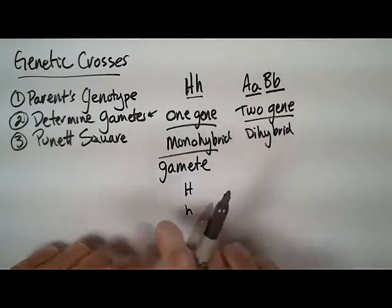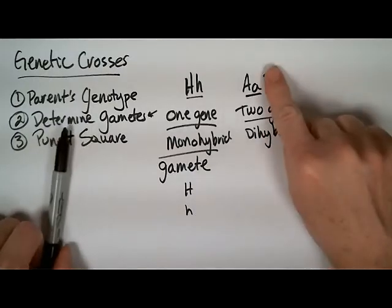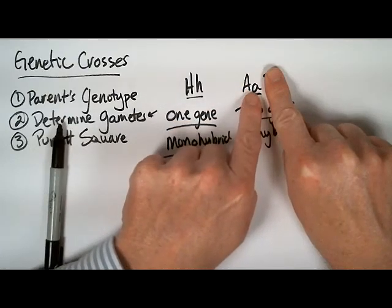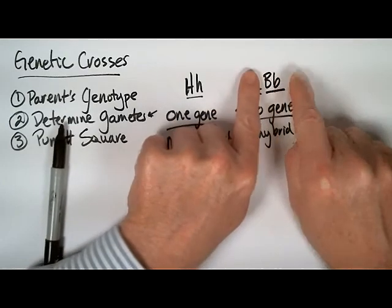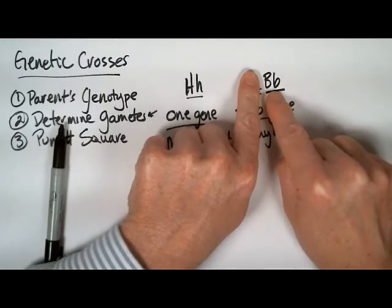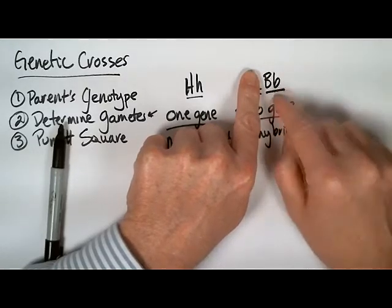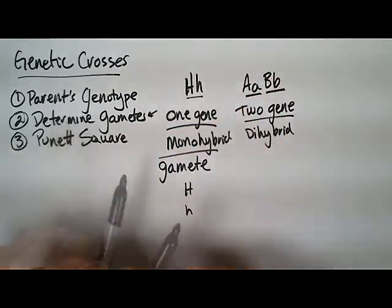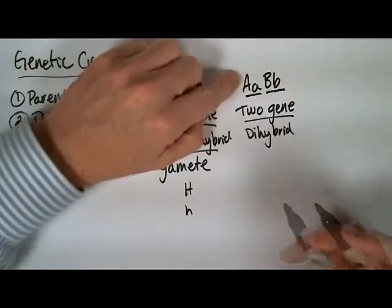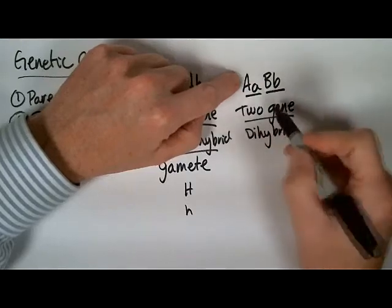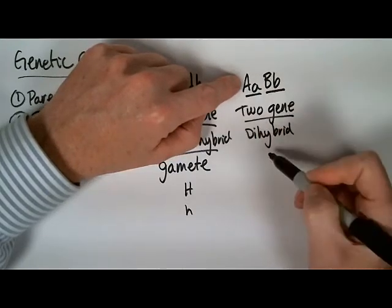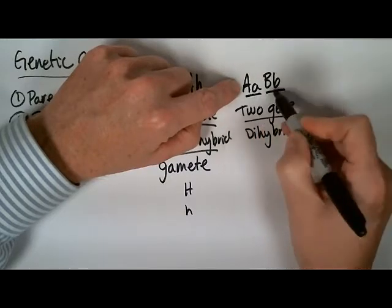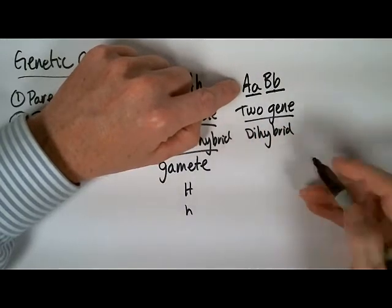Each gene gives one of its alleles to the egg or the sperm. So this gene would give a big A or a little a, and this gene also would give a big B or a little b, at the same time, into the same gamete, because you've got two genes you're looking at here instead of one. This organism's gametes would have one letter from one gene and one letter from the other gene in each gamete.